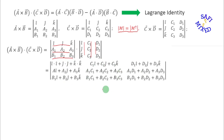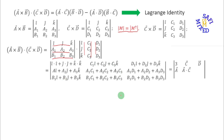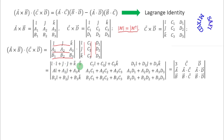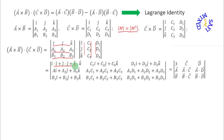I can now put this whole determinant into a simplified form. Since i dot i equals 1, j dot j equals 1, and k dot k equals 1, therefore 1 plus 1 plus 1 makes the first diagonal element equal to 3, and I write 3 at this position.